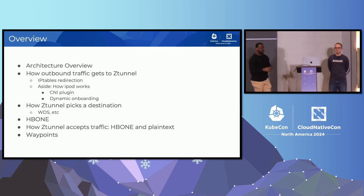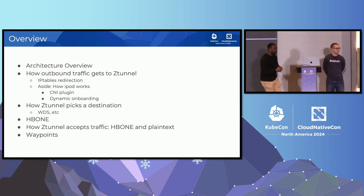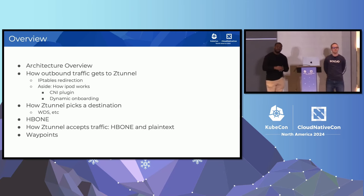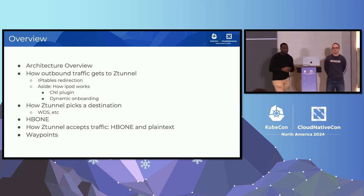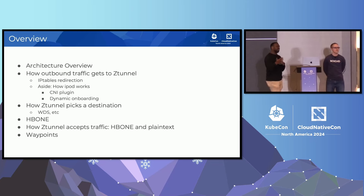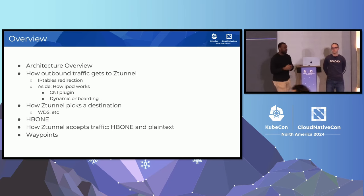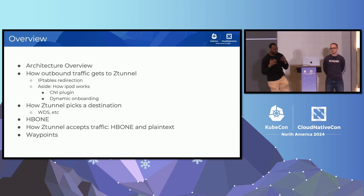This is the overview for today. We'll start with the high-level architecture so you can understand where everything sits topologically in an Ambient Mesh. We'll talk through how outbound traffic gets to the Z-Tunnel, break down all the pieces required to make that happen, cover load balancing, how Z-Tunnel picks a destination, the H-Bone protocol, plain text traffic, and finally waypoint proxies for layer 7. If we have time at the end, there's a mic in the center for questions, or you can stop us in the hallway track.